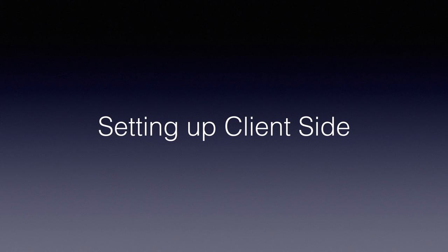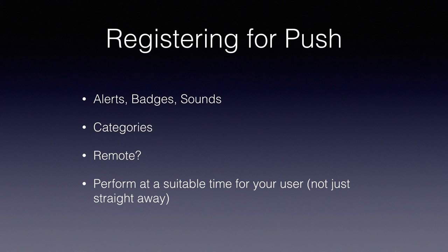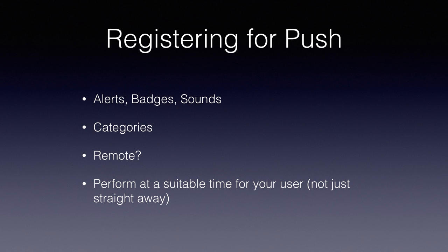Now, client side. You have to register for push by registering a settings object — in iOS 10 this has changed slightly. In the settings object you specify if you want alerts, badges, or sounds; you can register for a subset of those. You also have your categories, which are collections of actions. Then you optionally register for remote notifications. As soon as you call register for user notifications, the user gets an alert asking if they want to accept push notifications — and I'll talk about when a good time to do that is later; it's certainly not on app launch.